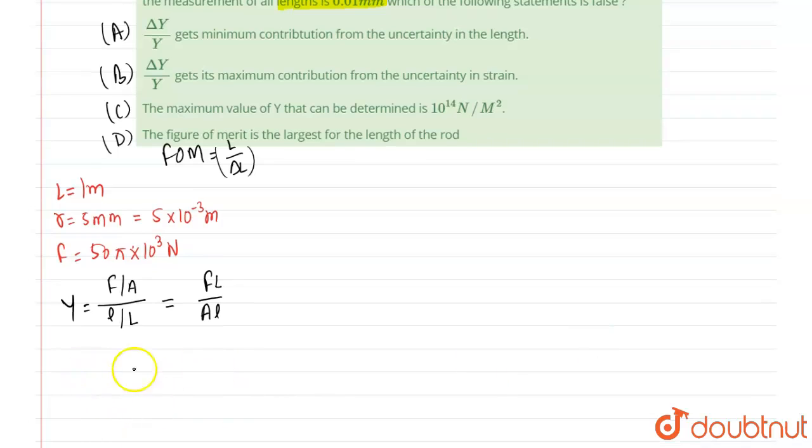So we will get the value with area πr², means Y equals FL over πr²ΔL. That is the relation of Young modulus.